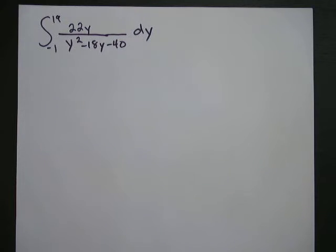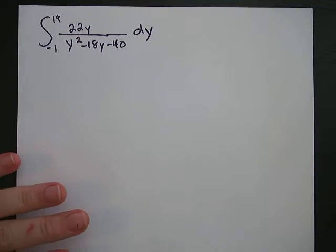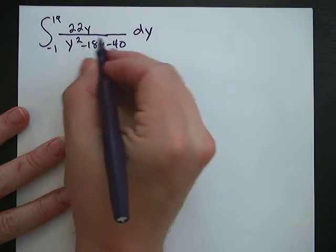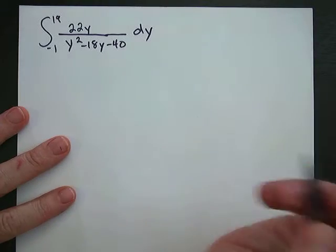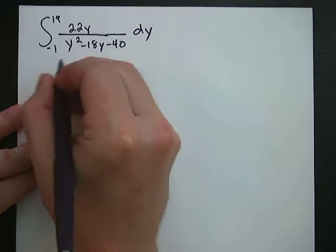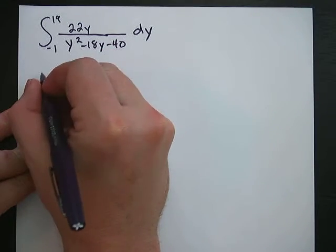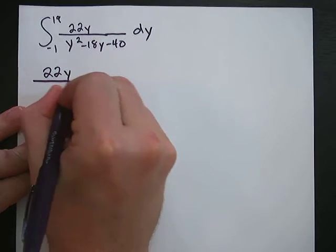In this problem, we have the integral from negative 1 to 19 of 22y divided by y squared minus 18y minus 40, dy. This problem is going to require partial fraction decomposition. We are going to figure out how we can rewrite this fraction as two different fractions that will make this integral solvable. So we'll come back to the integral — right now I'm just going to decompose this fraction.